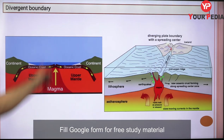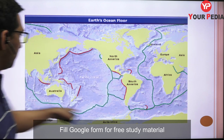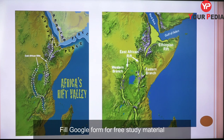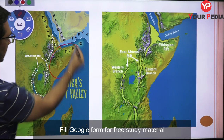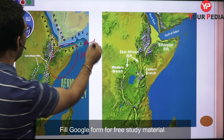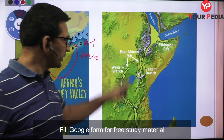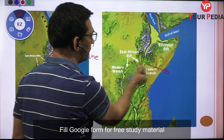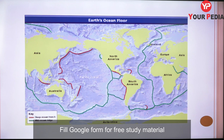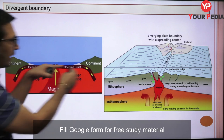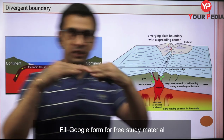The East African Rift Valley shows divergent boundary interaction — the African Horn area has plates moving away, creating depression and lakes in that region. The mid-oceanic ridges visible in the oceans are also examples of divergent boundary interactions. Moving on, the next type of plate boundary interaction is convergent — where two plates come towards each other and collide. We call this a convergent boundary interaction.